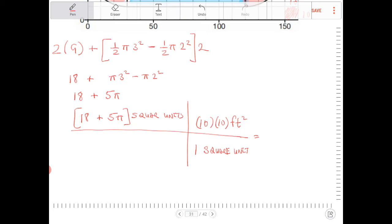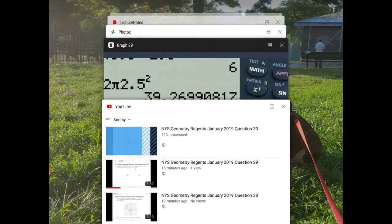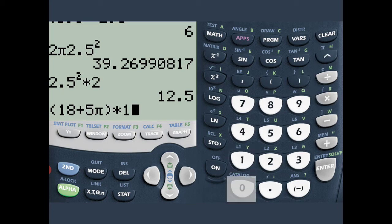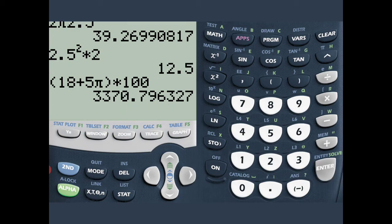So let's see what that is. We're going to go to our calculator now. So I'm going to put it in parentheses: 18 plus 5π times 100. And we're going to end up with 3370.79, or rounded to the nearest square foot.